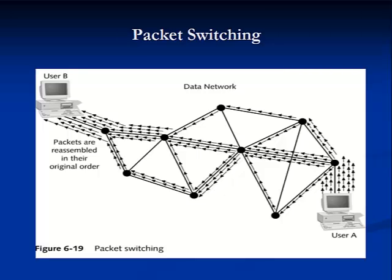This slide illustrates the new packet switched networks. Packet switching is a method of switching in which data are separated into packets before they are transported. Packets are free to travel to their destination because each packet contains a destination address and information about where its data belongs in the data stream. Packets are assembled in proper order at the receiving end.